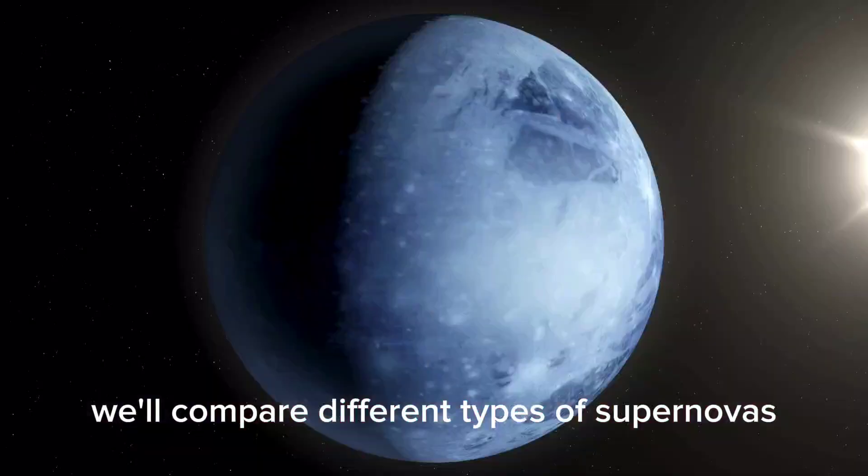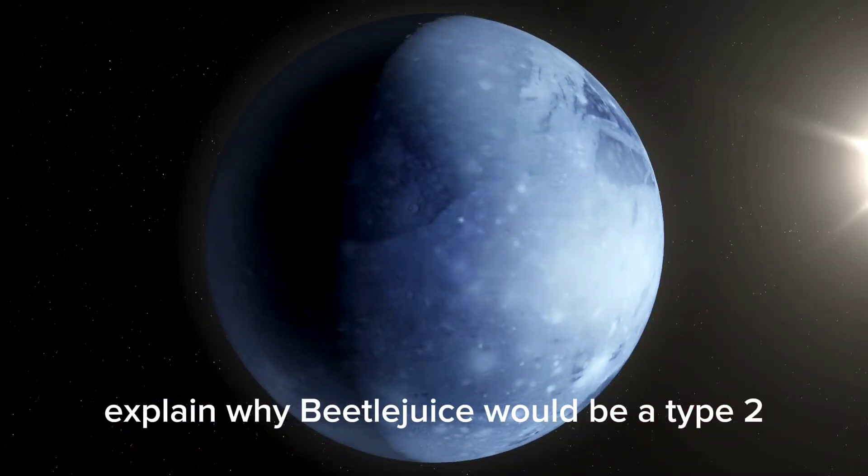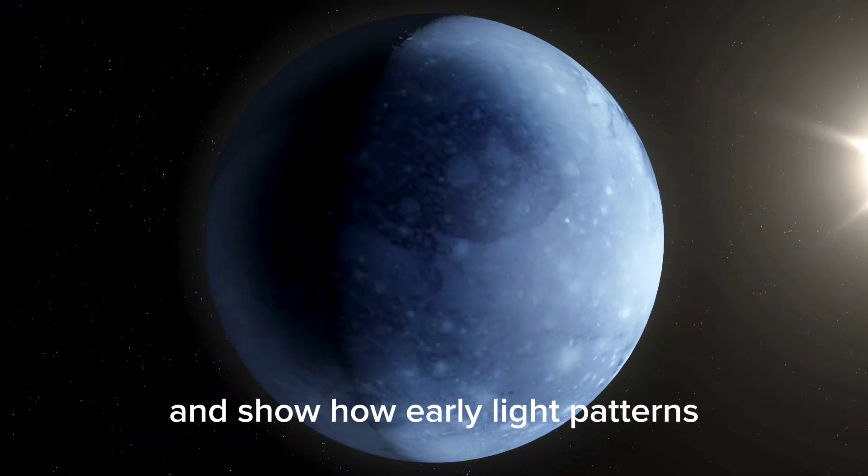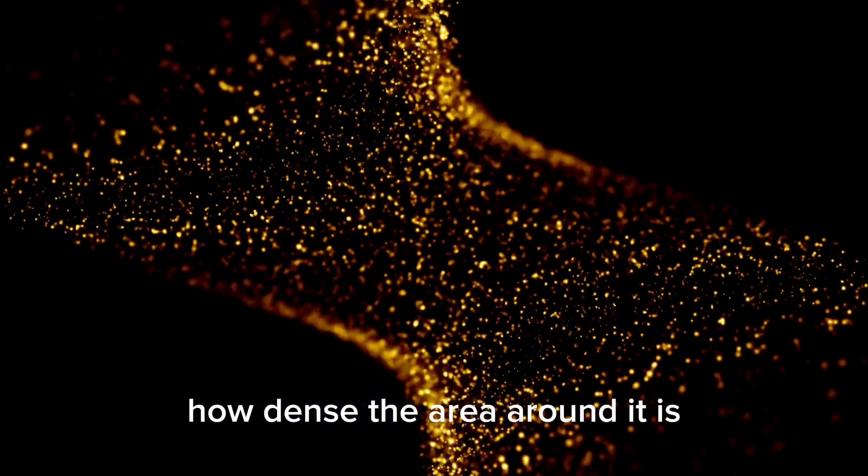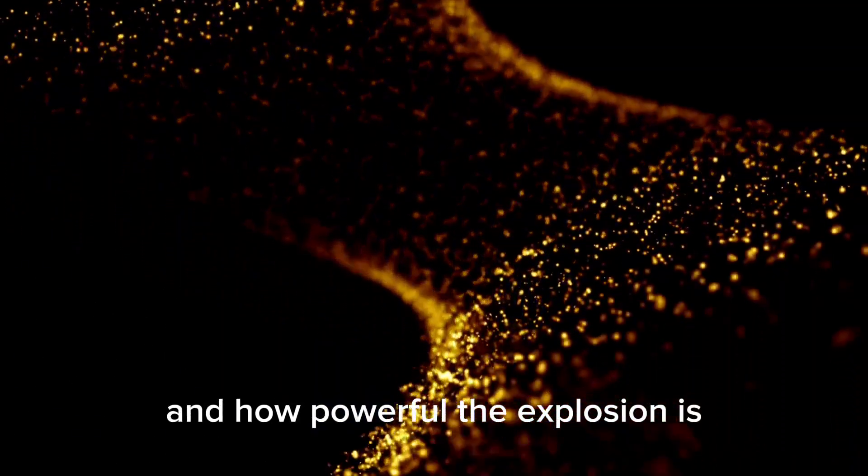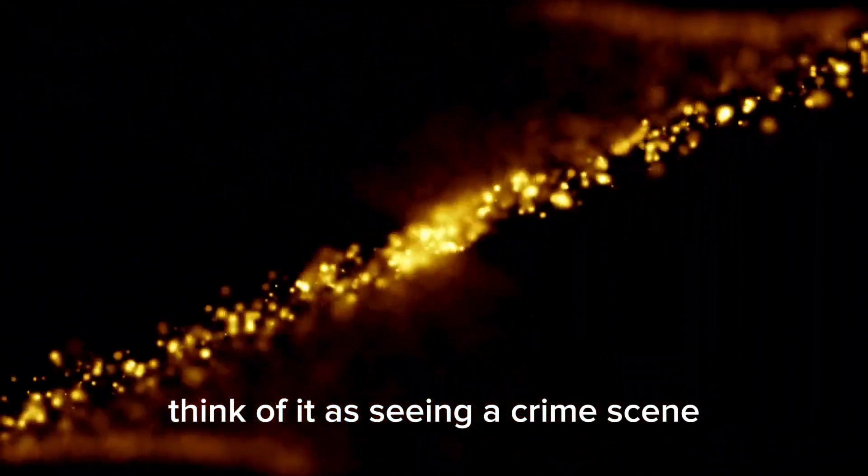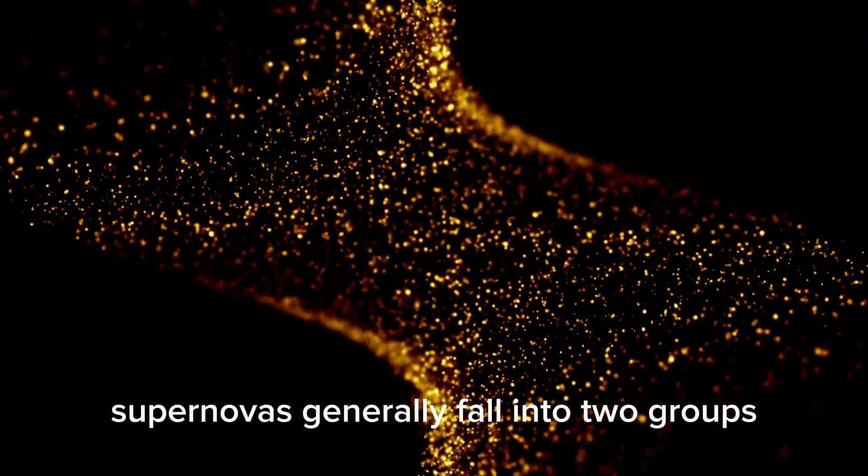We'll compare different types of supernovas, explain why Betelgeuse would be a type 2, and show how early light patterns can reveal a star's size, how dense the area around it is, and how powerful the explosion is. Think of it as seeing a crime scene before anyone touches anything.